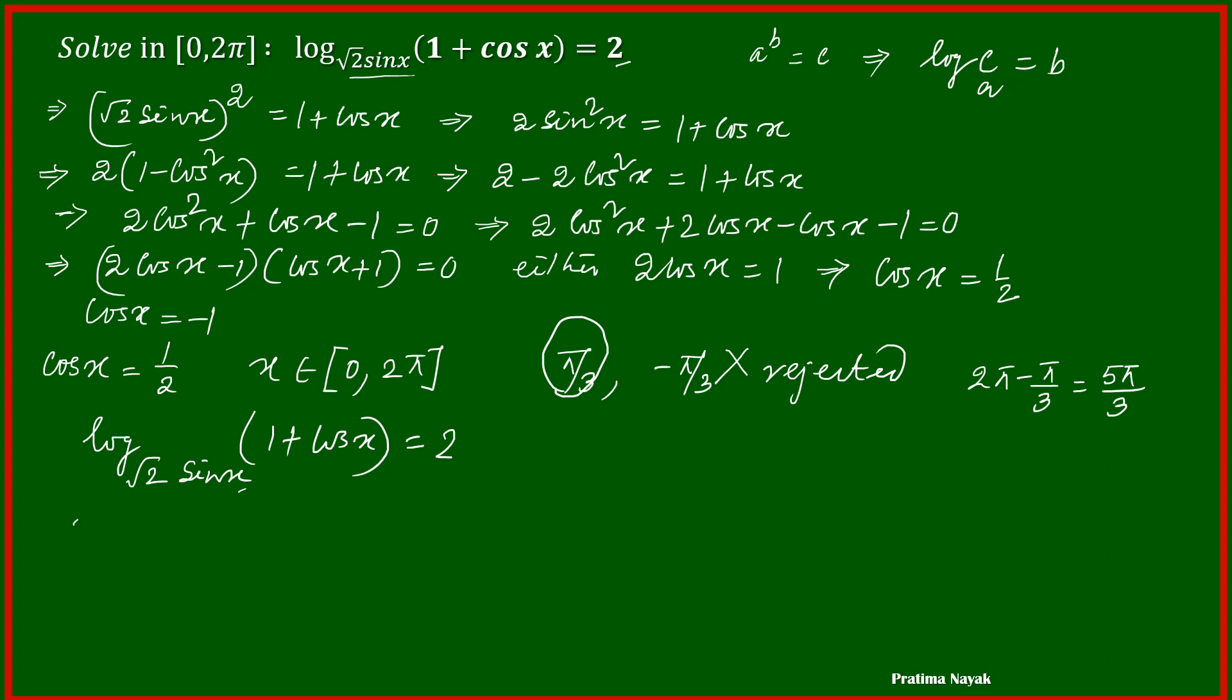Coming to cos x is equal to negative 1, if you put cos x equals negative 1 in this logarithm definition, it will be 1 minus 1, that will be 0. We know that logarithm of 0 to any base is not defined. So cos x equals negative 1 is rejected.